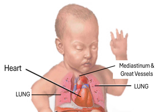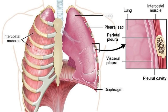You must realize that the chest contains two lungs and the mediastinal organs and vessels. Both the mediastinum and the chest are lined with two sets of pleura, the visceral and the parietal. The parietal pleura lines the chest wall and the thoracic side of the diaphragm. A continuation of the parietal pleura surrounds the heart and mediastinum. The visceral pleura surrounds the lungs.